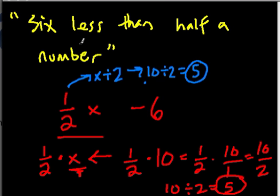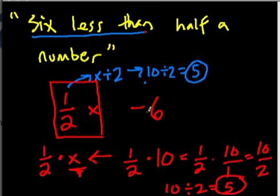And 5 is half of 10. 6 less than half a number is definitely the area where we might get confused. We're subtracting 6 from this number, and it's 6 less than this number. So we're not doing 6 minus one half x.